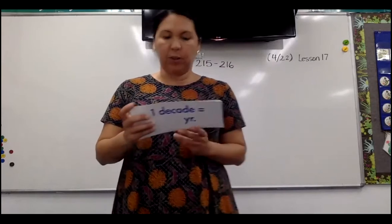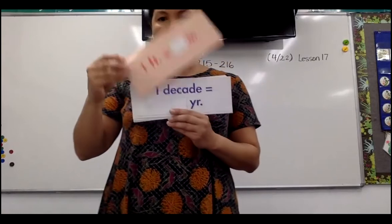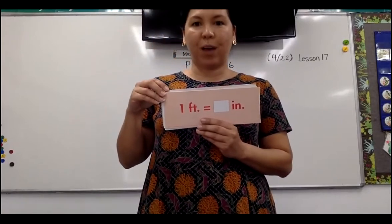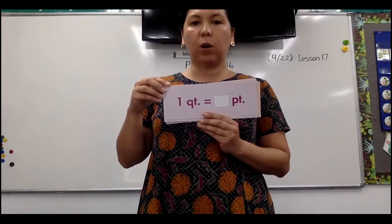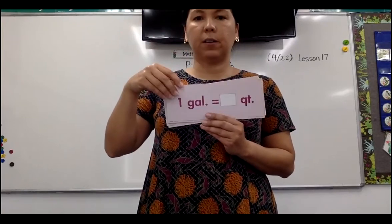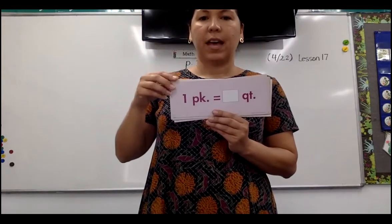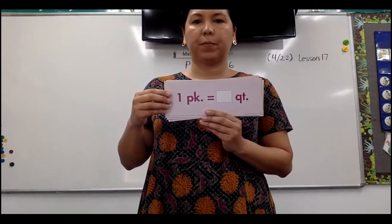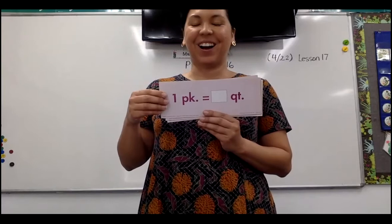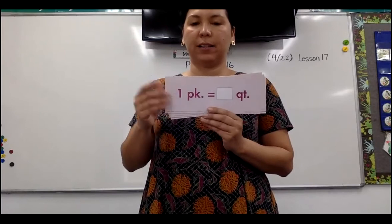Now we're going to try to go a little faster, keeping the same order, then I'll mix it up on the second round. How many inches in a foot? 12. How many pecks in a bushel? Four. How many pints in a quart? Two pints in a quart. How many quarts in a gallon? Four. How many quarts in a peck? Eight — because a peck is two gallons, and it takes eight quarts to make two gallons. Eight quarts in a peck.